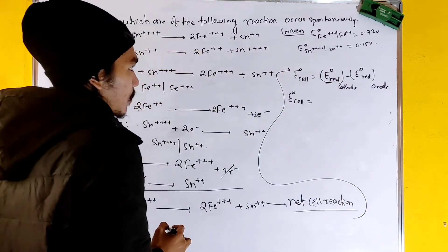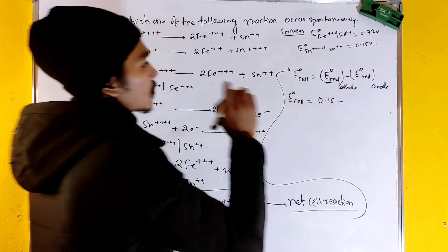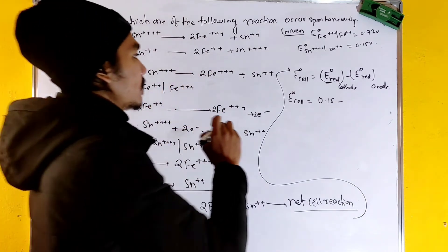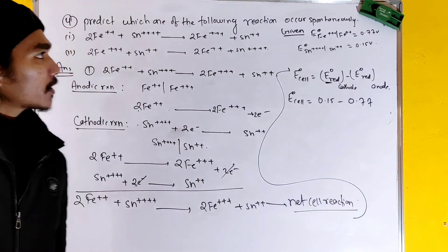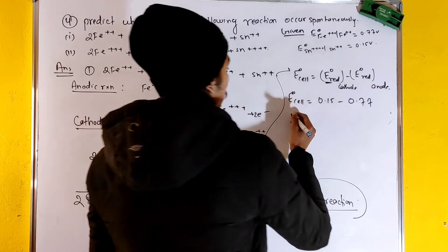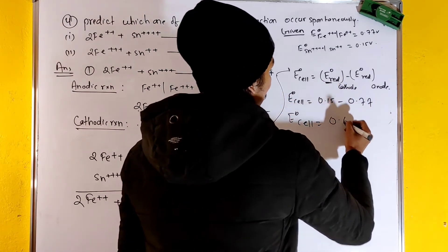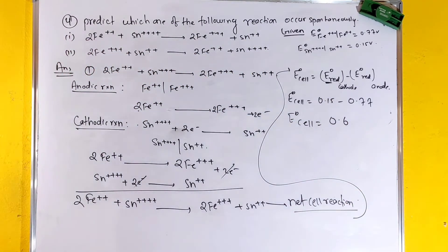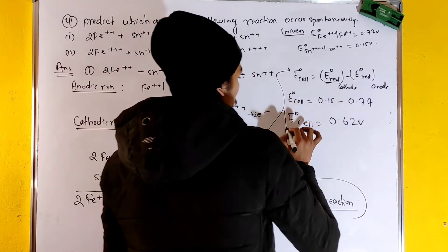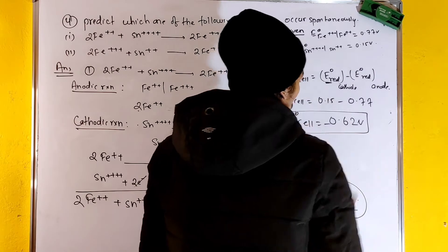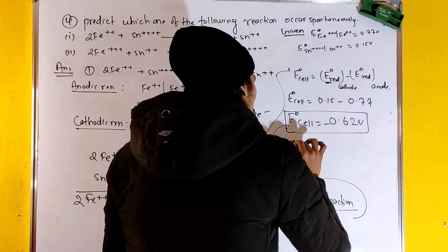E°reduction of cathode minus E°reduction of anode. That means 0.15 minus 0.77. The E°cell reduction potential calculation gives us 0.62 — so E°cell is 0.62 volts. But it came out as negative, so this reaction will not be spontaneous — it is non-spontaneous.